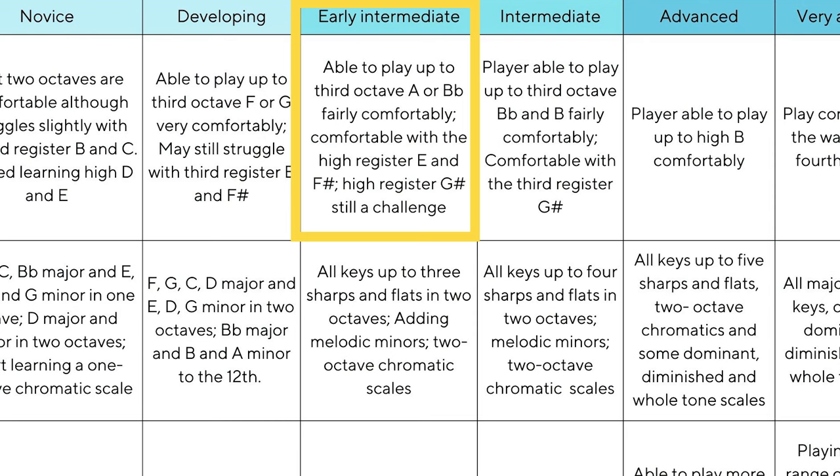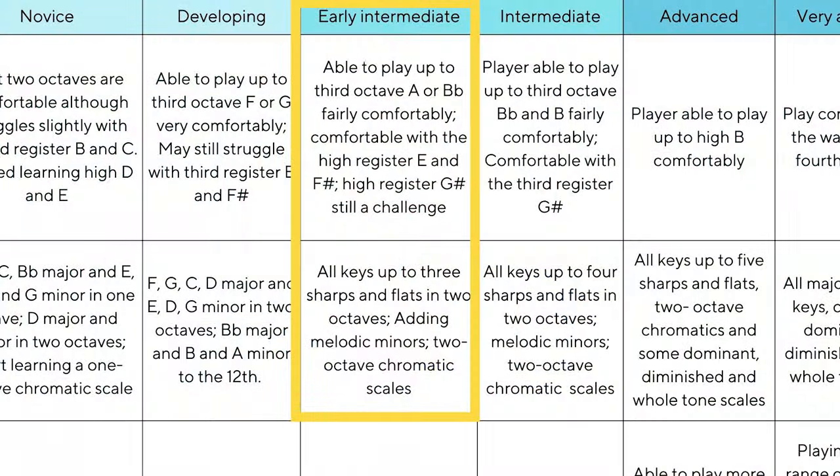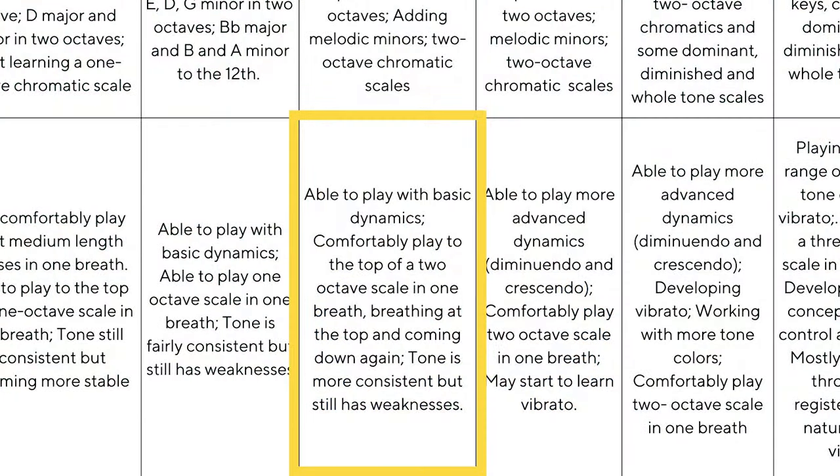Other distinguishing features: you can play quite comfortably up to that third register F, G, maybe even branching out to that high register A and B flat already. You know your scales up to two, three, maybe even four sharps and flats. For some of you, you might not know any of your scales yet and you're still part of this group, so don't let that be the determining factor. Your tone is coming along, but it isn't quite that full, rich, round sound that you hear from other players. You probably haven't yet started learning things like vibrato or double tonguing.